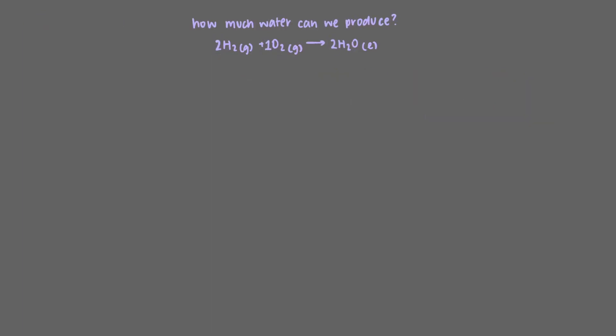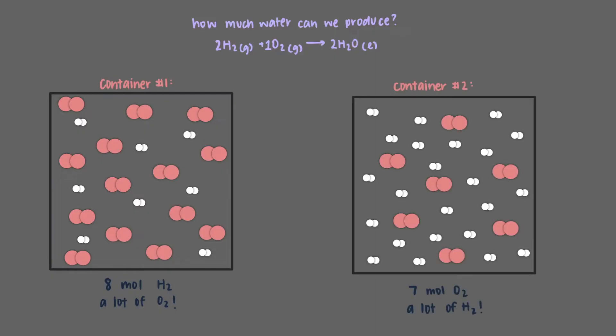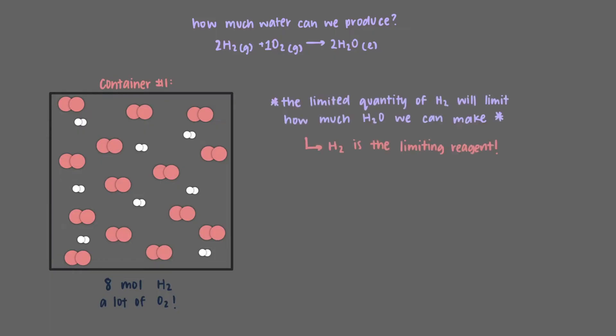To answer this question, we'll look at 2 other containers. This container will have the 8 moles of hydrogen and as much oxygen as you could possibly want or need. Since there is an infinite amount of oxygen, it's only the limited quantity of hydrogen that will limit how much water we can make. Hydrogen is the limiting reagent in this container.